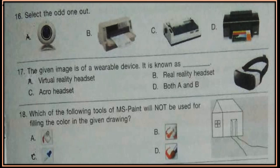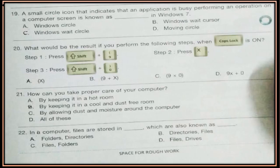Question 18. Which of the following tools of MS Paint will not be used for filling the color in the given drawing? Four options are given — which tool in MS Paint is not used for filling the color in the given drawing? Question 19. A small circle icon that indicates an application is busy performing an operation on a computer screen is known as dash in Windows 7. See the picture on the right side and choose the correct option: Windows circle, Windows wait cursor, Windows wait circle, or moving circle.